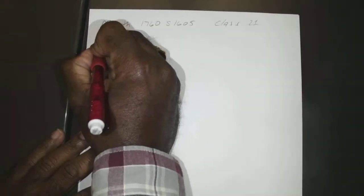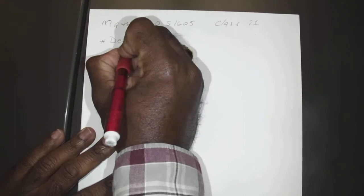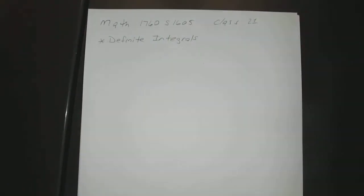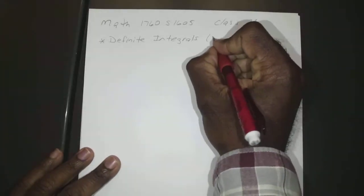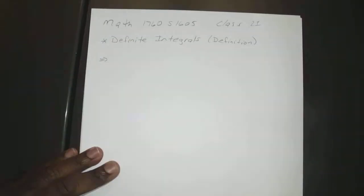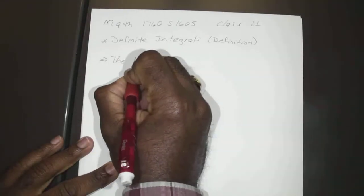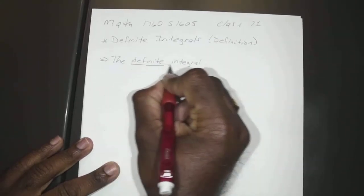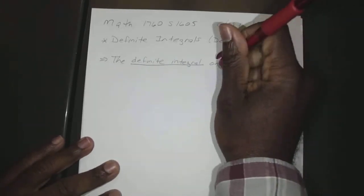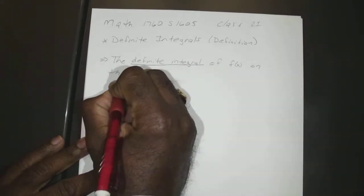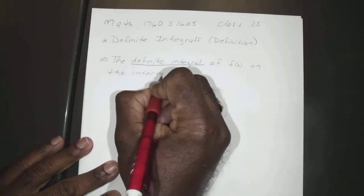Let's get started. Today we're going to go over definite integrals — the actual definition. The definite integral of some function f of x on the interval a to b is denoted by the integral of f of x with respect to x from a to b.